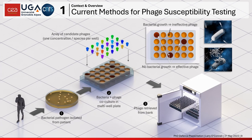Here is what phage susceptibility screening currently looks like. A patient presents at a healthcare facility with an antibiotic-resistant infection. We isolate the pathogen, then fill a standard multi-well plate with a liquid culture of this pathogenic bacteria. In each well we add a different species or concentration of phage — these are the candidate bacteriophages. We put this into an incubator, wait about six hours, and if the phage is effective the solution turns clear because of the lytic effect rupturing the bacteria.